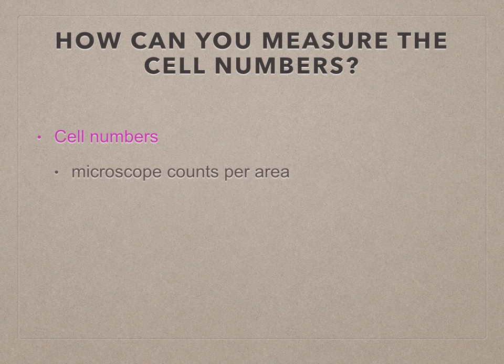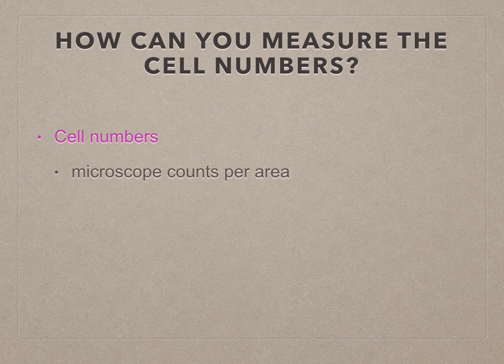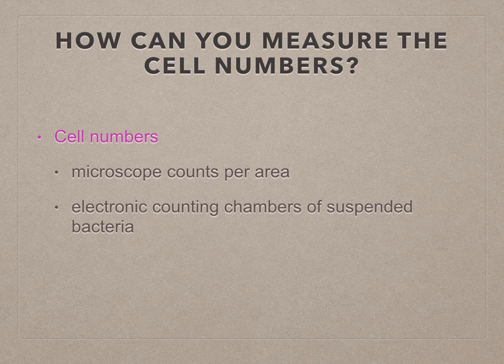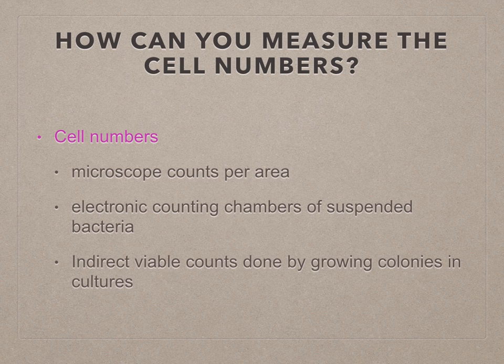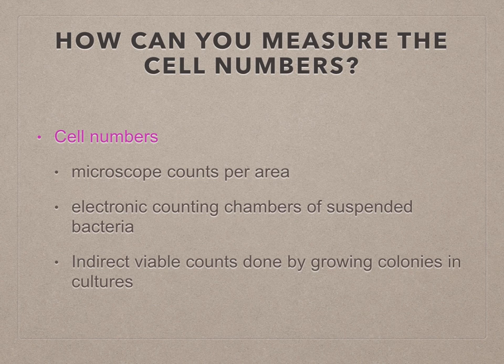For cell numbers, you would use a microscope to count the cells per area, or you can use electronic counting chambers of suspended bacteria. There's also indirect viable counts done by growing colonies and cultures.